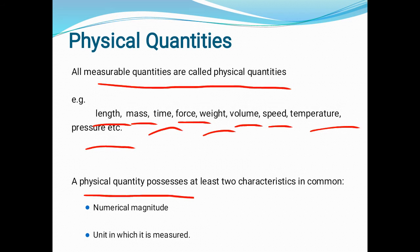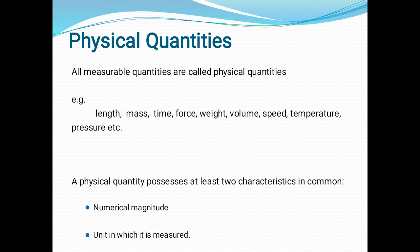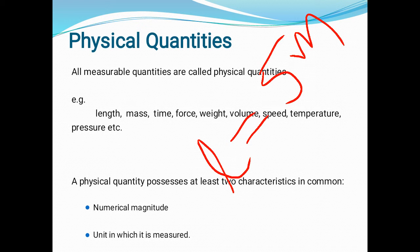A physical quantity possesses at least two characteristics in common: numerical magnitude, and the unit in which it is measured. The concept of a physical quantity is very straightforward. For example, if we are given a task to find the length of a classroom — length is noted by L — and after measurement you get the length of a room as five meters. Here, five is the numerical magnitude and m is the proper unit of the physical quantity length.